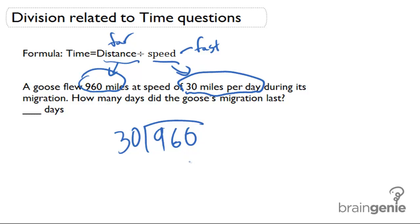So we can think of it in this way. How many times does 30 go into 96? We know that it happens to be 3 times, and 3 times 30 is going to be 90, and 96 minus 90 is 6.